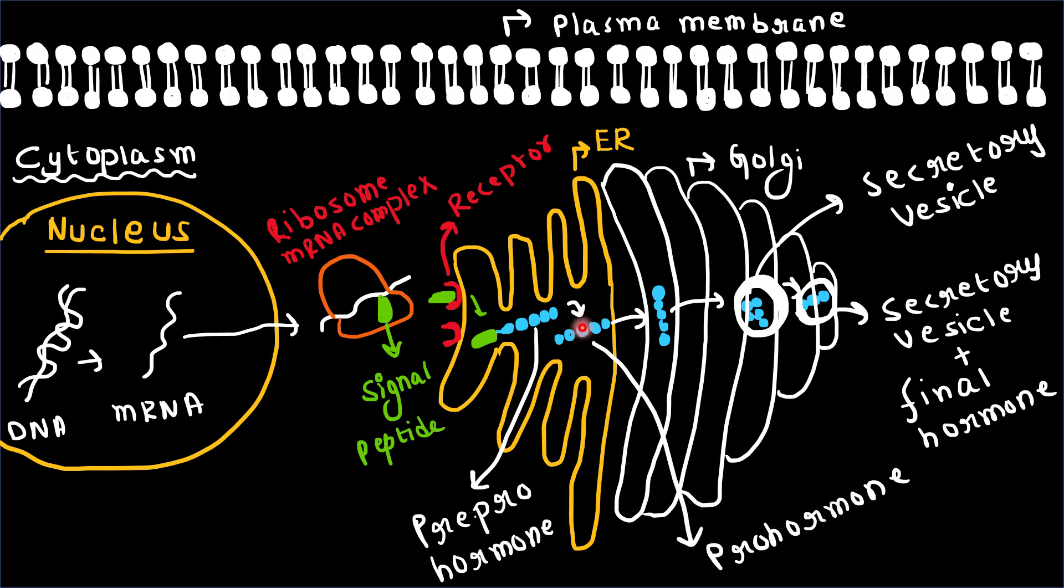The prohormone contains the complete hormone sequence plus other peptide sequences which will be removed in the final step. These other peptide sequences in the prohormone are necessary for proper folding of the hormone. The prohormone is transferred to the Golgi complex where it is packaged in secretory vesicles.